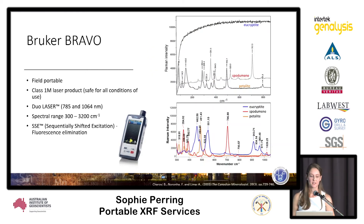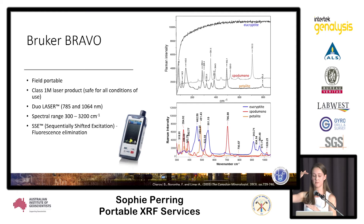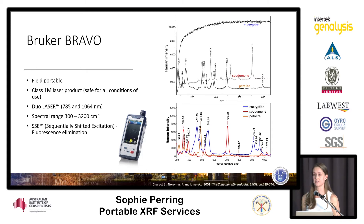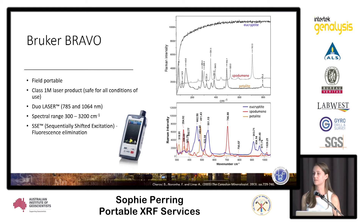For our project we used the Bruker Bravo Raman. The features that made it suitable for these applications: it is a field portable instrument, very easy to handle, and you don't have any health and safety issues as it just uses a class one laser. This particular instrument uses sequentially shifted excitation algorithms, which is important for Raman spectroscopy because one of the adverse effects you often have with excitation of your mineral sample by a laser is the unwanted effect of fluorescence.